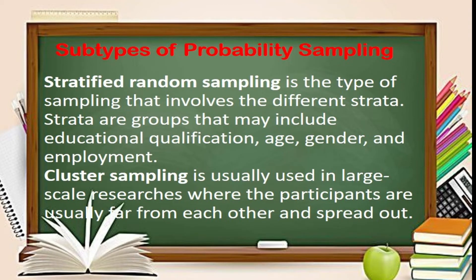Next is stratified random sampling. The population is first divided into different strata, and then the sampling follows. Age, gender, and educational qualifications are some possible criteria used to divide a population into strata. For example, a researcher will study the common effects of smoking on high school students. The researcher decides to select an equal number of students from junior and senior levels.